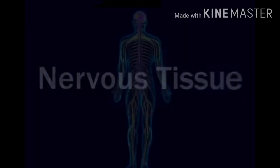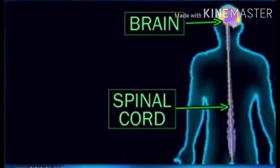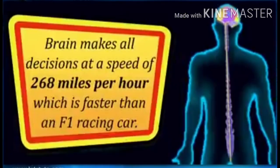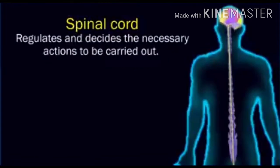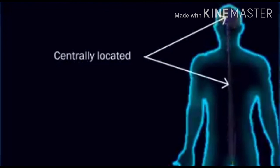Now we will come to our last topic — nervous tissue. The nervous tissue has two main components: the brain and the spinal cord. Both are connected to each other. The brain helps to make all decisions at very high speed — as soon as signals are received, the brain makes decisions and sends them back to our body. The spinal cord is the pathway through which our body is connected to the brain; all nerves connect to the spinal cord and the spinal cord ultimately connects to the brain.